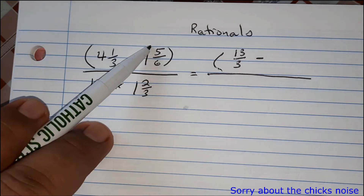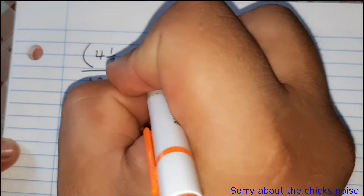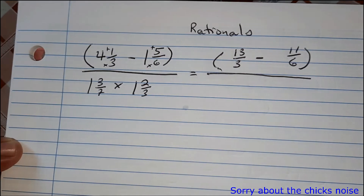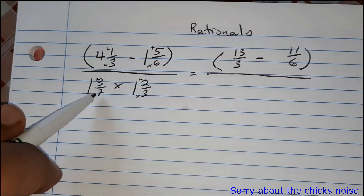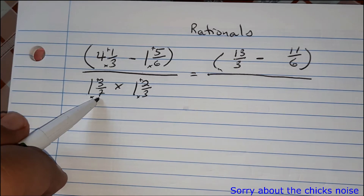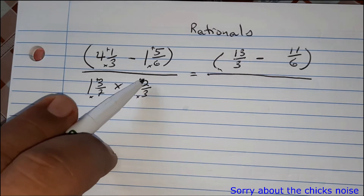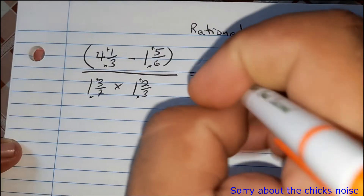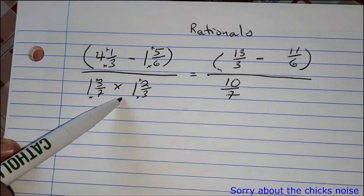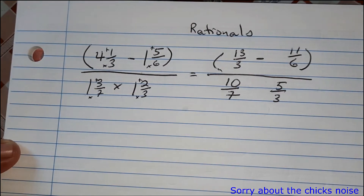Then minus: six times one is six, six plus five is eleven — so that's eleven over six. We change everything to improper fractions. For the denominator: seven times one is seven, seven plus three is ten — so ten over seven. And three times one is three, three plus two is five — so five over three.